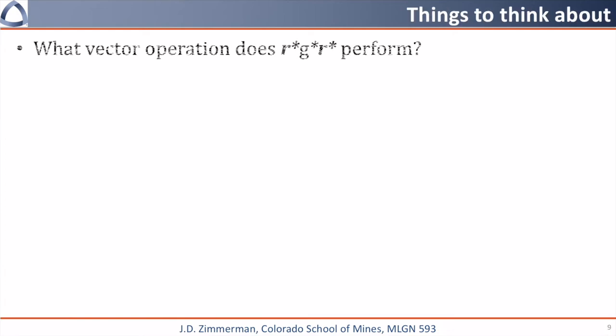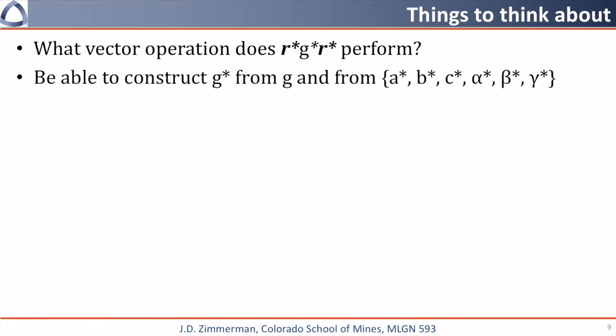I have a few things I'd like you to think about. Make sure you know, what does the vector operation r-star, G star, r-star perform? You should be able to construct G star from G and from the definition of our reciprocal space lattice. You should know how the magnitude of r-star is related to the interplanar spacing for a given HKL value.